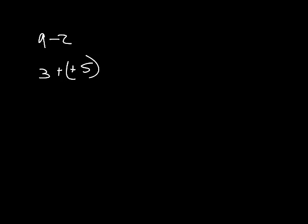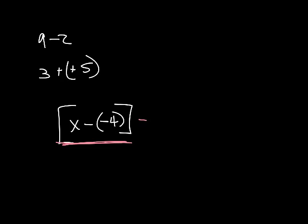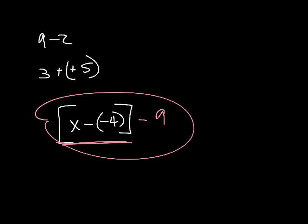Example 10: write the mathematical expression equivalent to the phrase '9 less than the difference of x and negative 4.' The difference of x and negative 4 means we're going to subtract negative 4 from x. That subtraction symbol is your difference symbol — the difference between x and negative 4. And what are they doing? 9 less than that, so they're going to take 9 away. These things get to be really tricky, and the only way you're going to get them down is by continuing to practice.